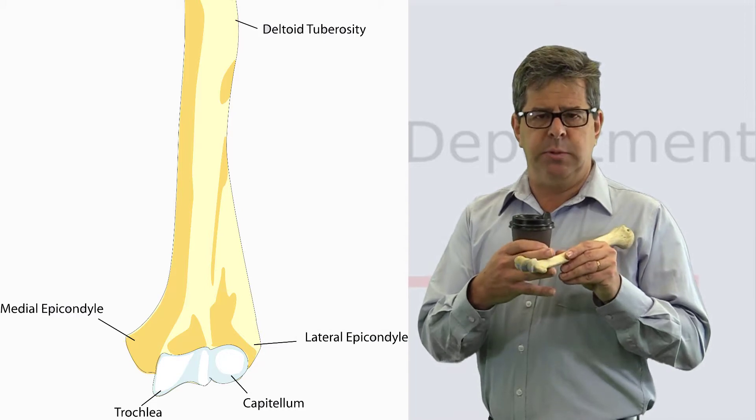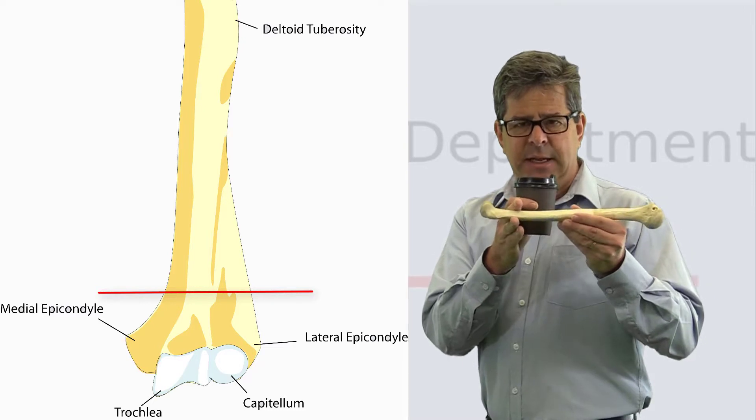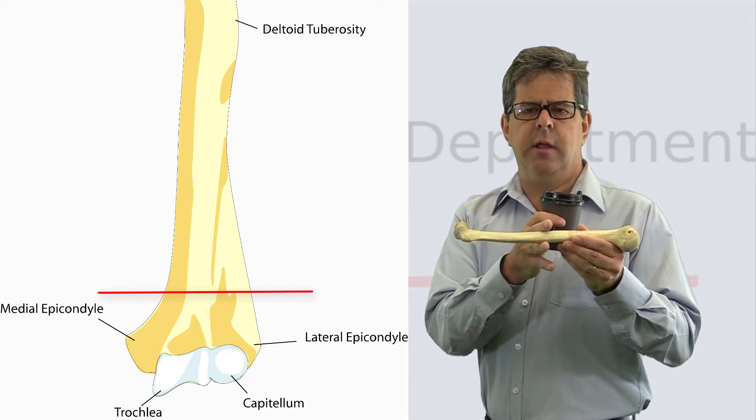This supracondylar region is thinner, much thinner than the main shaft, and this thin area is prone to fracture.